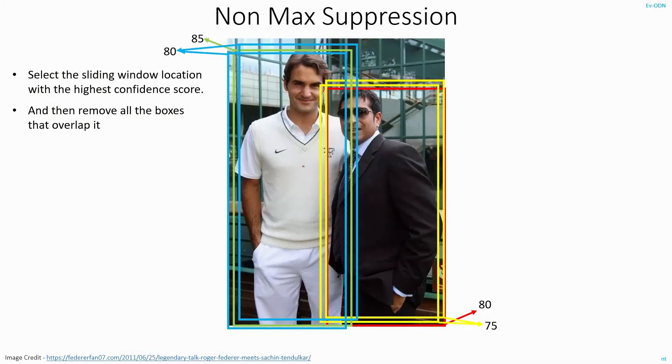Except that it has a problem in few cases. Let's consider this image and apply the same algorithm. Here, I will select the box with the highest confidence score that happens to be this green one and remove all the boxes that are overlapping it. That is, I will remove these blue boxes. But not only that, I will also end up removing the yellow and red ones.